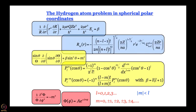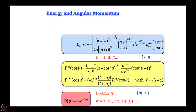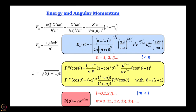Solving the r part gives the Laguerre polynomials, and applying boundary conditions yields the principal quantum number n, ranging from 1, 2, 3, and so on, with l always less than n. From the r-dependent part we find energy; from the theta-dependent part we find total angular momentum; and from the phi-dependent part we find the z-component of angular momentum. These are the pieces of information contained in each part of the wave function.